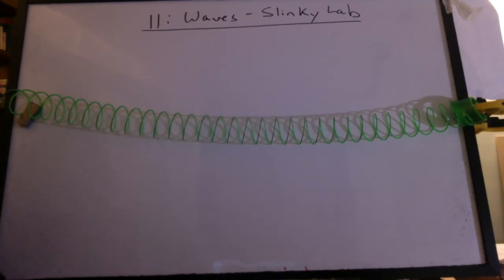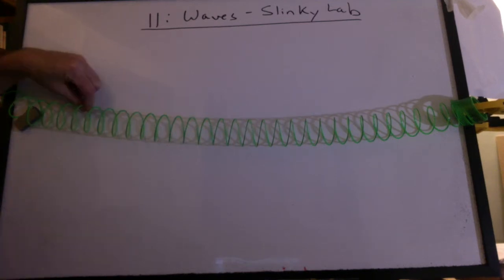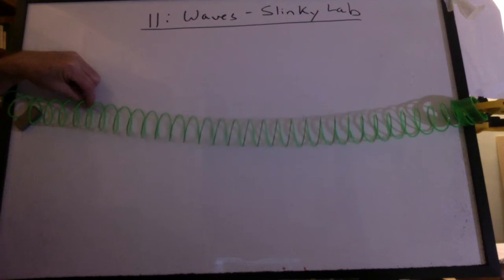We've started chapter 11 on waves, and we're doing the slinky lab. Everybody should have a slinky, and I've asked everyone to make a wave on the slinky. What do you do? You make a disturbance, and the wave travels along the slinky.